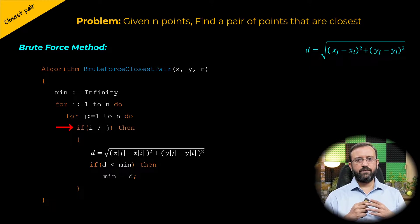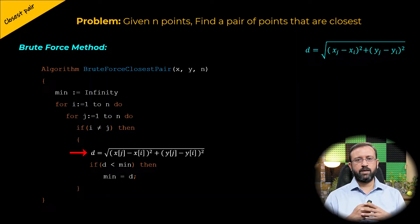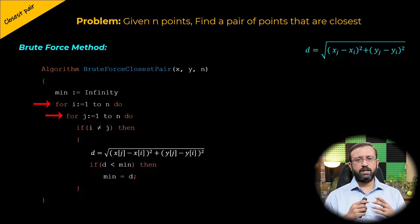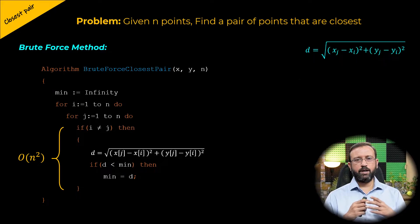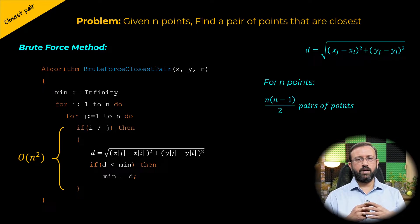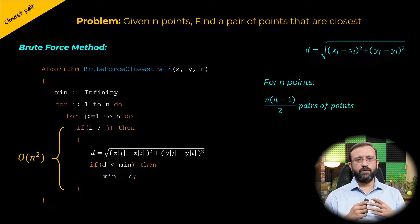So we check if i is not equal to j, and if true, we compute the distance between point i and point j. When we analyze these statements, the for loop for i executes n times and the inner for loop for j also executes n times. Therefore, the overall complexity is O(n²). For n points, we have n multiplied by (n minus 2) divided by 2 pairs, and computing the distance between each pair requires O(n²) time.